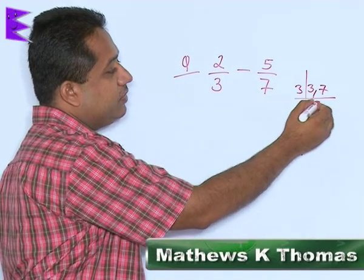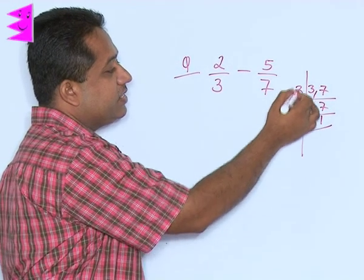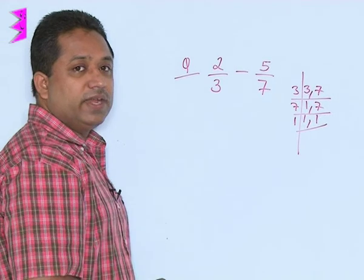So, 3 goes once and 7 also goes once. Therefore, we can say that the LCM is 3 into 7, that is 21.